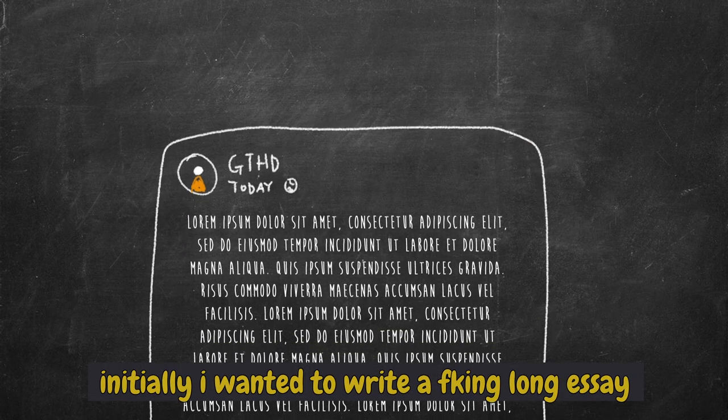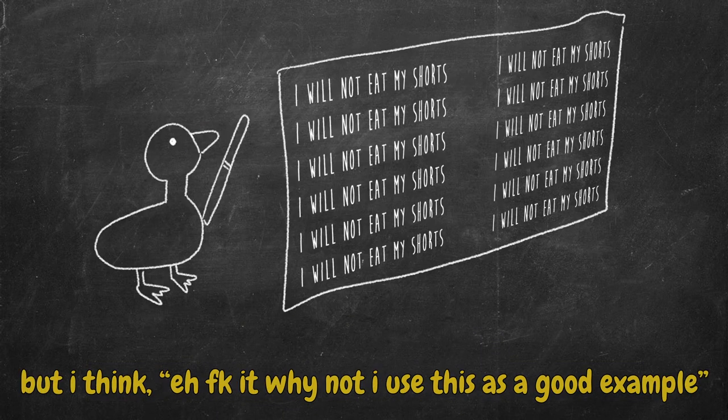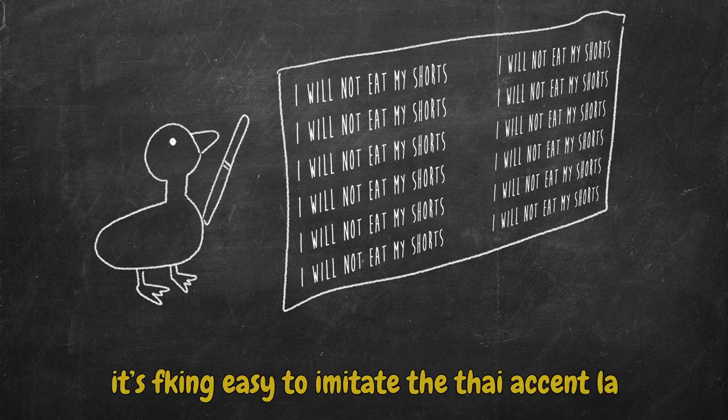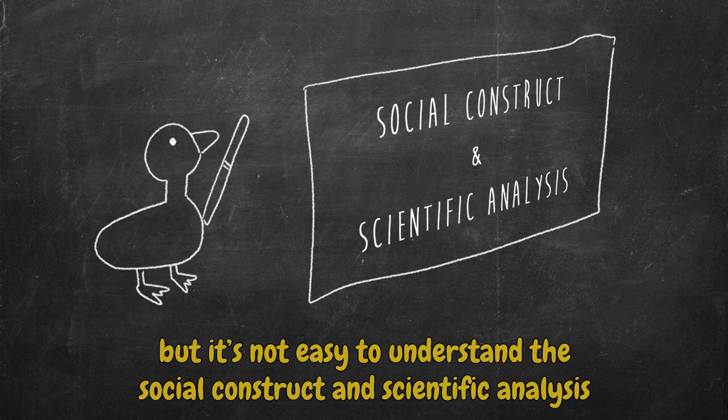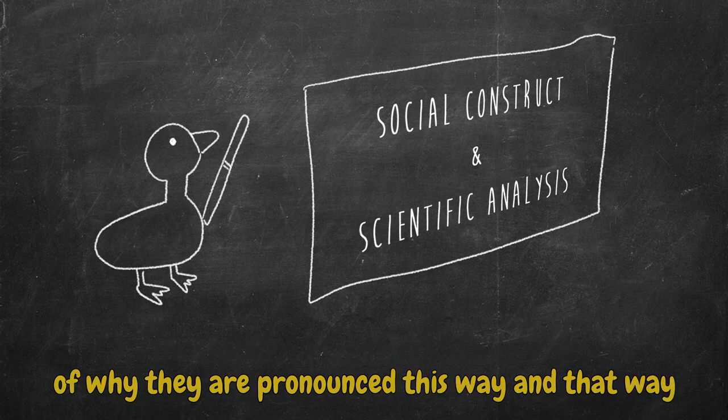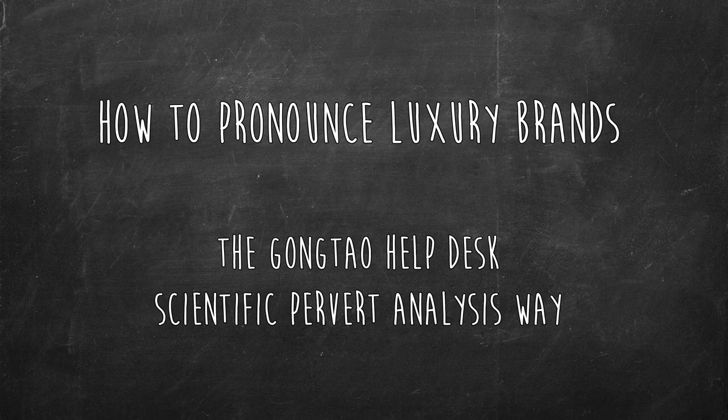Initially, I wanted to write a fucking long essay to explain why each point is wrong. But I think, fuck it, why not I use this as a good example to teach you all instead. It's fucking easy to imitate the Thai accent lah. But it's not easy to understand the social construct and scientific analysis of why they are pronounced this way and that way. So I present to you how to pronounce luxury brands. The Gongtao help their scientific pervert analysis way. Trademark.